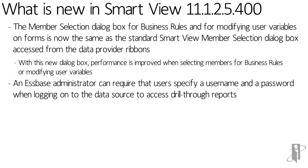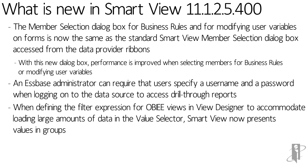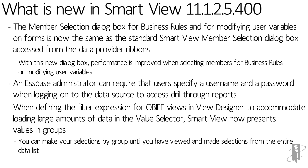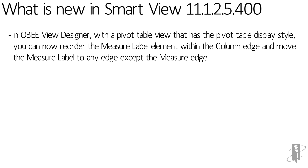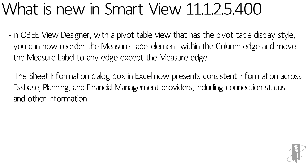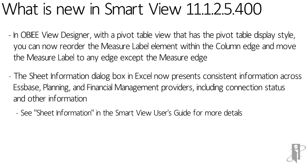In prior versions you don't have this functionality. When defining filter expressions for OBIEE views in the view designer, large amounts of data used to cause Smart View to choke. Now they bring in your selections by group until you've viewed everything and made selections from the entire data list, so you can bring in smaller chunks and get it working properly. In the view designer's pivot table view, you can now reorder the measures label to be within the column edge and move it to any edge except the measures edge. The sheet option dialog box in Excel now presents consistent information across Essbase, Planning, and Financial Management, including connection status and other information.